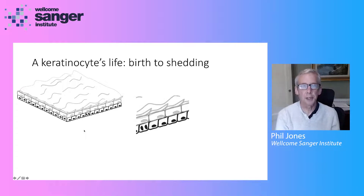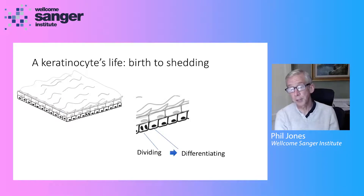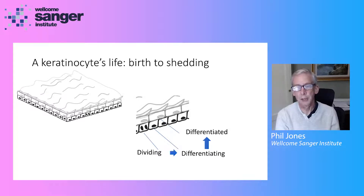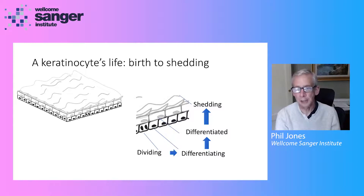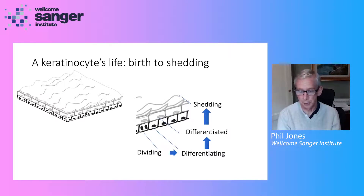The keratinocyte life cycle is: they're born by cell division in the bottom-most cell layer of the tissue. Some daughters go on to divide, and some decide to differentiate — when they differentiate they exit the proliferative layer, migrate towards the cell surface, and are shed into the lumen of the esophagus. This process of shedding goes on throughout life, so there's a continual need for more cell divisions to replace the cells that are lost.